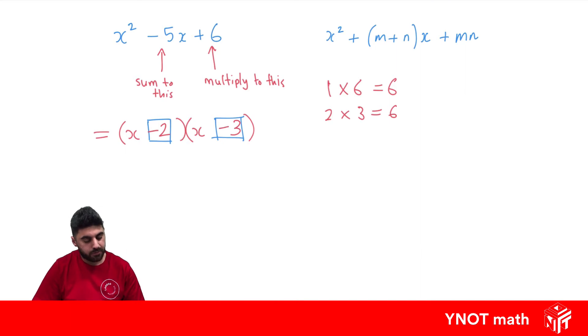So our answers are -2 and -3. Let's double check: -2 × -3 gives us positive 6, and -2 + -3 gives us -5. That's the answer to our factorization.